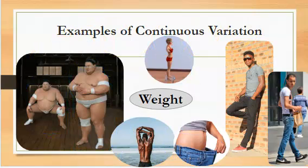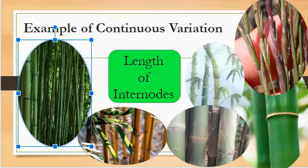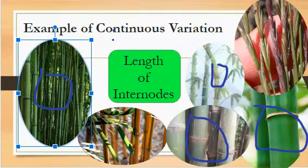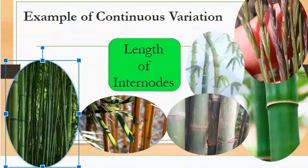Another example is the length of internodes, and it's clearly depicted here — different lengths of internodes. Some are longer, some are shorter. I think this one is a cassava plant, this is sugarcane, and this is a bamboo tree, which is similar to this one. So another example in plants is the length of internodes, and then we also have different flowers, fruits, colors, and so on.